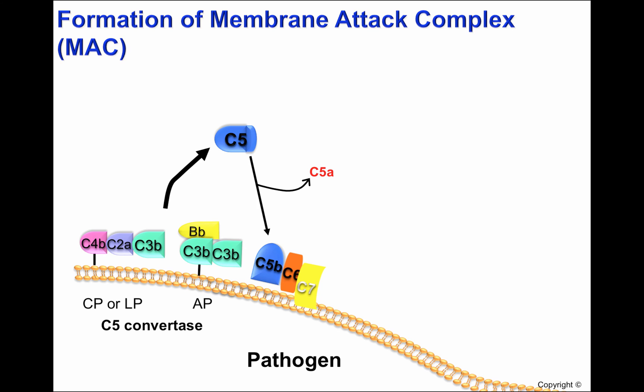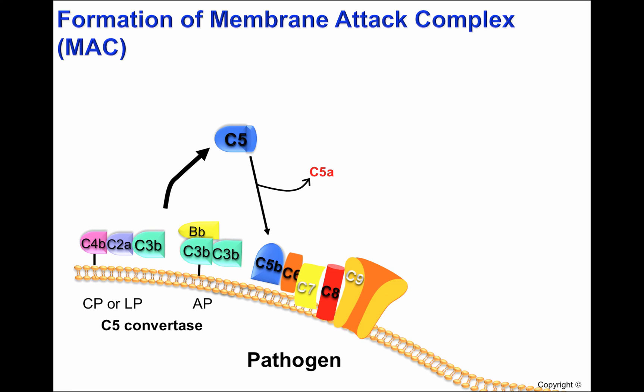This complex binds to the membrane through C7, then C8 binds to the complex and inserts into the cell membrane. Finally, C9 will bind to C8. About 10 to 16 molecules of C9 will start polymerizing on the cell membrane, forming a pore. The complex C5B to C9 is also called membrane attack complex or MAC.